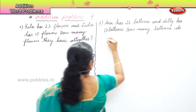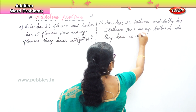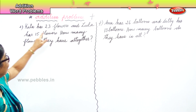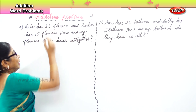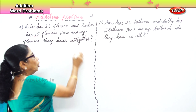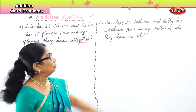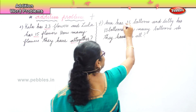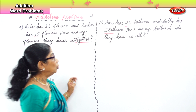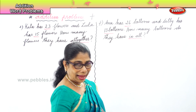Now two stories are put up. The first story says Kala has twenty-three flowers and Leela has fifteen flowers — how many flowers do they have all together? When we get the word 'all together' it means this plus that, addition. And when you get the words 'in all,' that also means addition — we have to add.